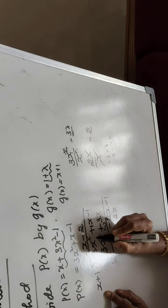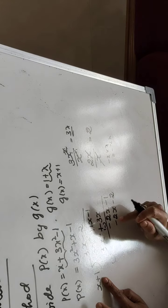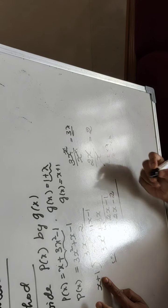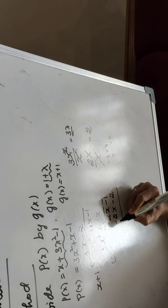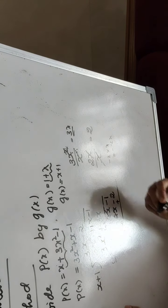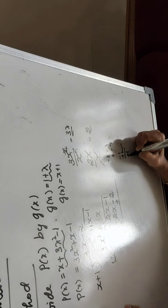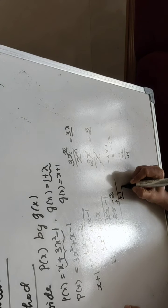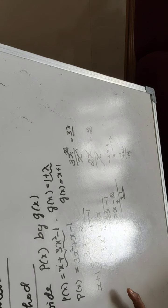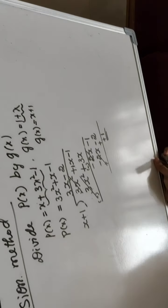Change the signs again — minus becomes plus and minus becomes plus. Plus 2 and minus 2 cancel. Then minus 1 plus 2 gives plus 1. Since the remainder is smaller than g of x, we stop. The division is complete.